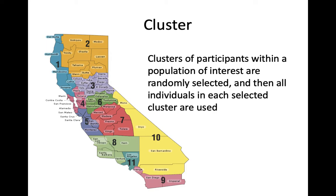For example, if you wanted to randomly sample high school students in California using a cluster technique, you would start with a list of all public high schools — those schools would be your clusters. Then you randomly select, say, 100 of those high schools, and include every single student from each of those 100 schools in the sample. The random part is selecting which high schools; once you've got the high schools, you include every single student at that school.